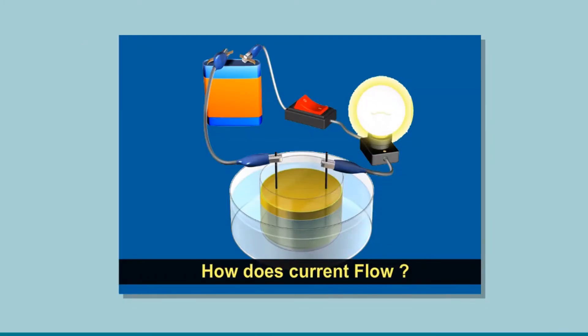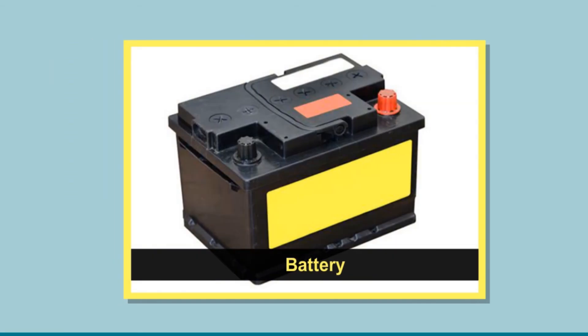As we saw earlier, current can flow only through a circuit. An electric circuit contains the following: 1. An electric cell or battery which can generate current.